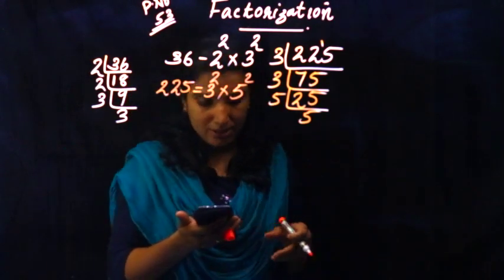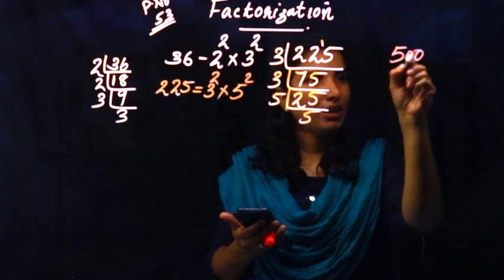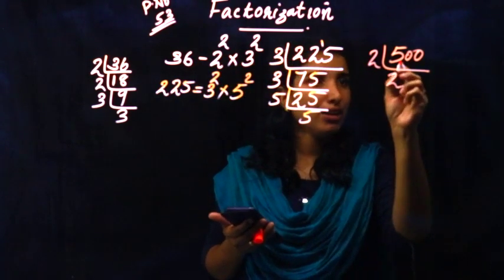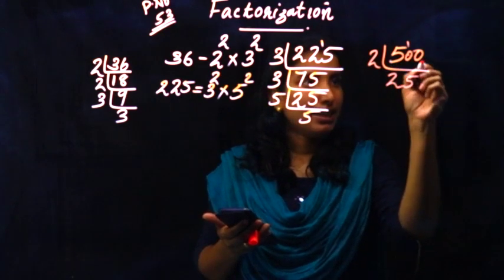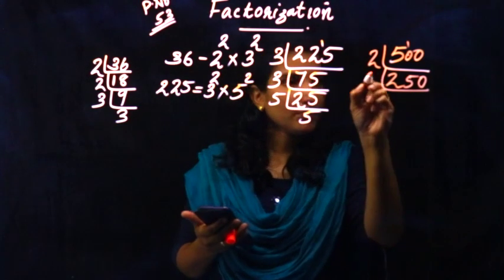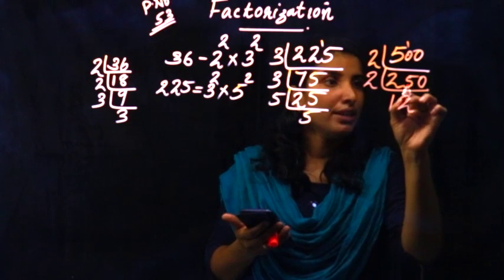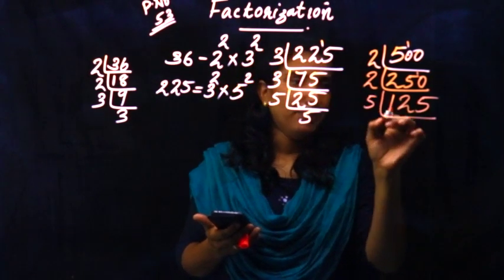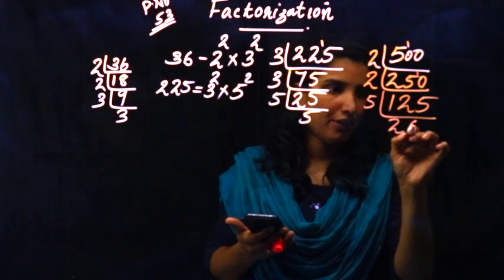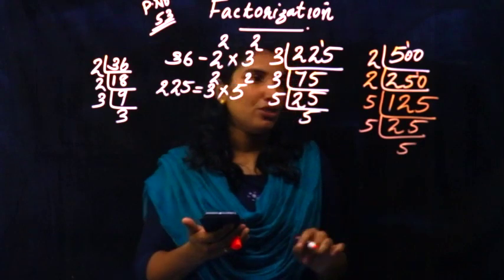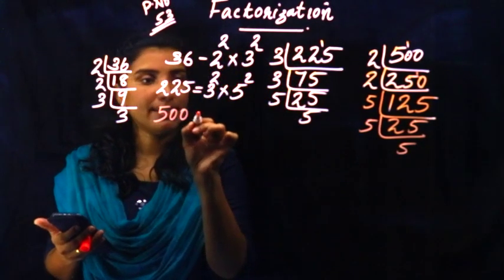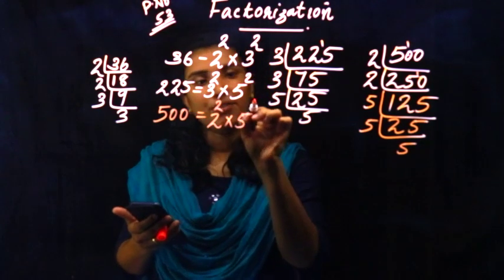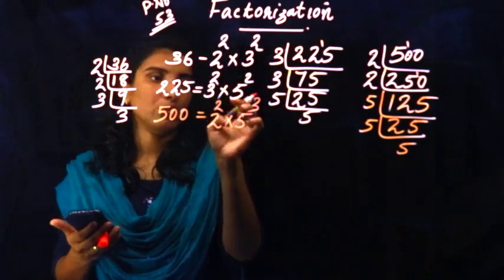Now we have to do 500. We have to do 250. Then 1 carry 10, 5, 2, 10. Then again 2 — 250. Then 1 carry 10. 10 is equal to 5. Then again, now we have to do 5. 5, 2, 10. Then 25, 5, 5, 25. Again, 5, 5, 25. Now we have to do 25. 500 is equal to 2 squared into 5 cubed.